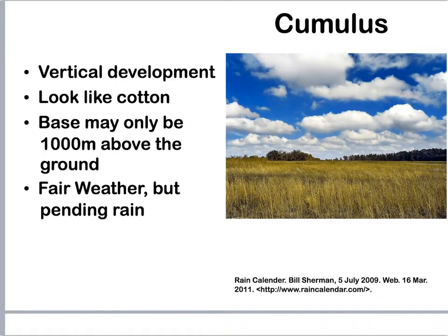Moving on to the cumulus clouds. These have vertical development, which means they're the big puffy ones — they look like cotton balls. Since we don't have alto or cirro in front of the word cumulus, they're going to be relatively low, less than 8,000 feet. These are also considered fair weather clouds, but they could potentially mean rain is on its way.